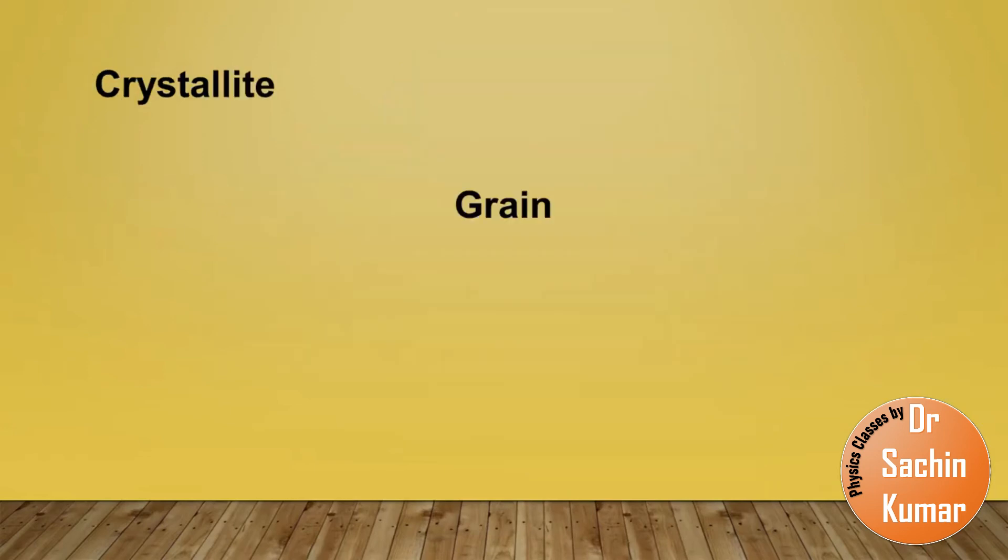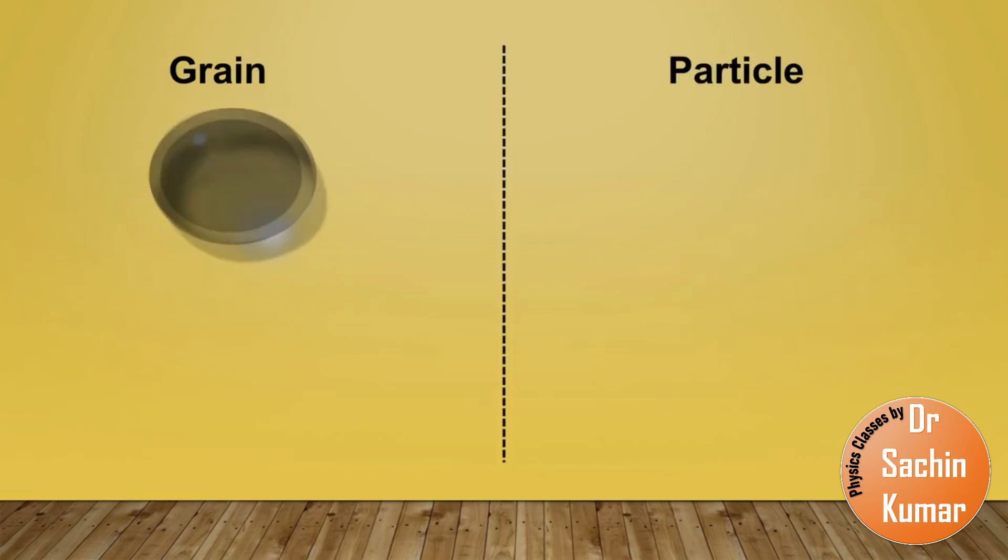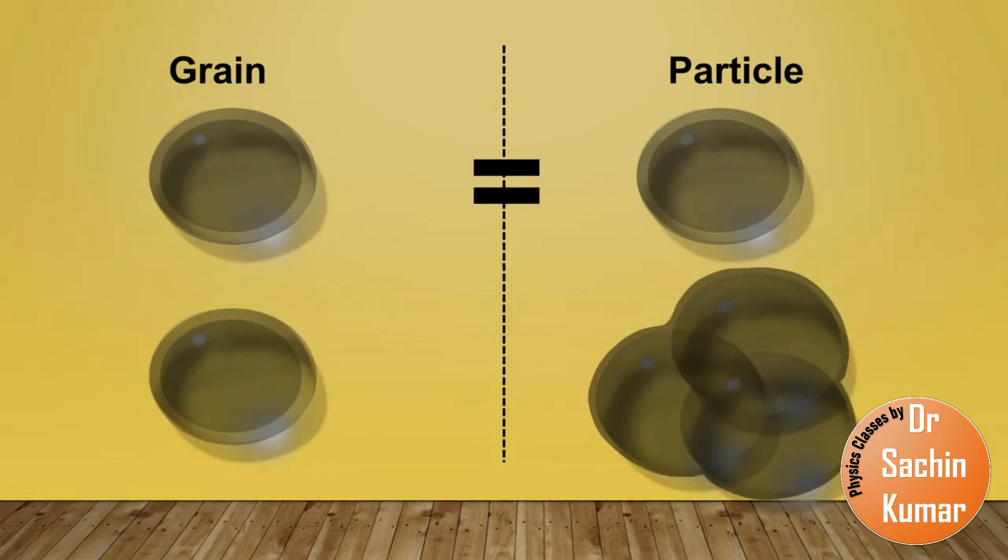So now let us compare a crystallite, a grain and a particle. Let us start the comparison between grain and the particle. This is a grain by definition, and in case when each grain is discreetly present in your sample, in that case your grain is same as your particle. So you can switch between these two definitions. But in the case when you have grains that are basically in a combination, overall this is a particle. So in that case, the grain size is smaller than the particle size.